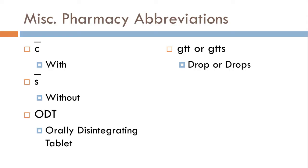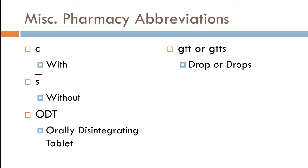Here are some miscellaneous sig codes you'll see fairly often. A lowercase 'c' with a bar over it means 'with' — many doctors also write a 'W' with a slash after it. An 's' with a bar over it means 'without.' ODT stands for orally disintegrating tablets — think meltable tablets, the kind you'd put under the tongue. GTT or GTTS means a drop or drops — ear drops, eye drops, whatever kind of drops.